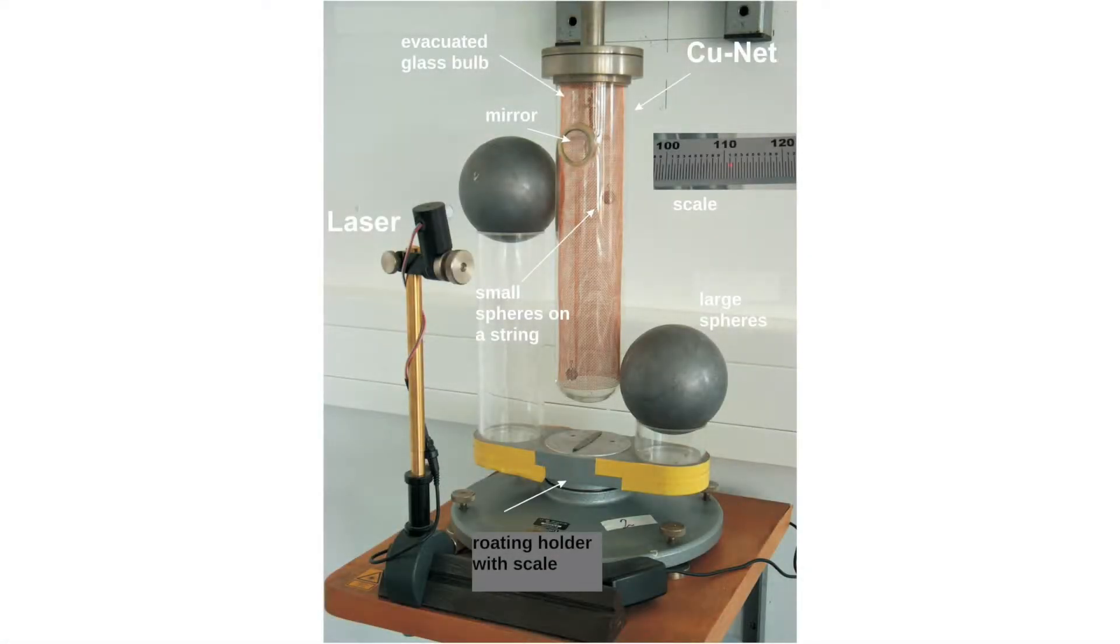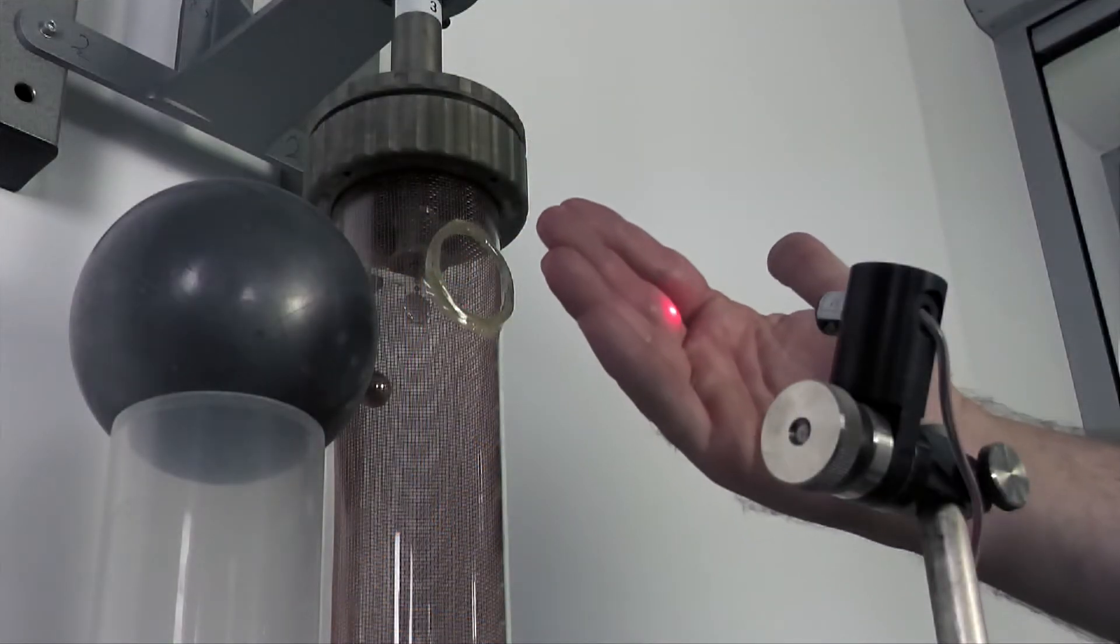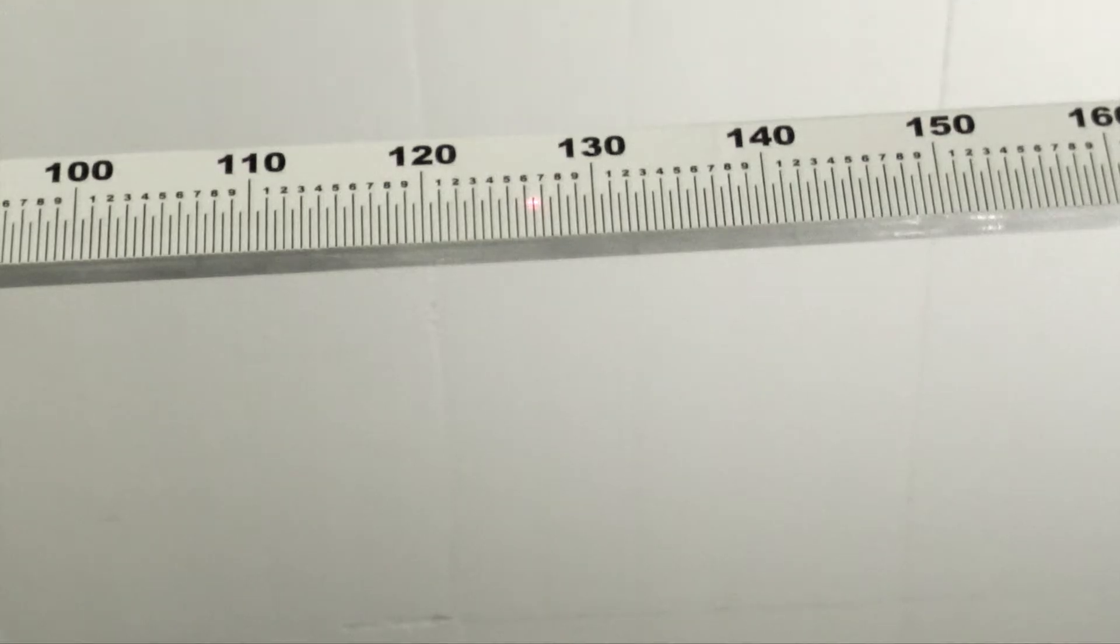The picture shows the experimental setup. The Cavendish experiment consists of two small spheres suspended on a torsion thread in an evacuated vessel with a mirror on the thread. The mirror is illuminated by a laser and displayed on an opposite scale.